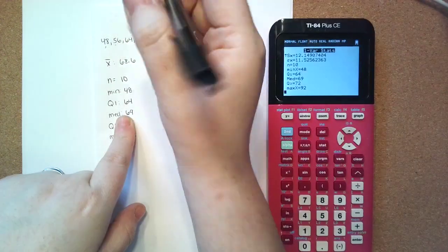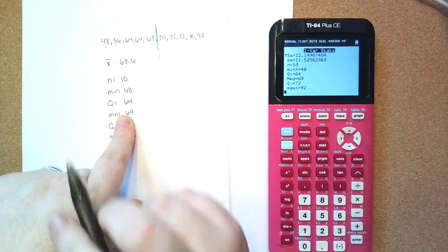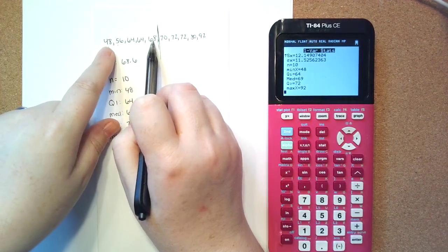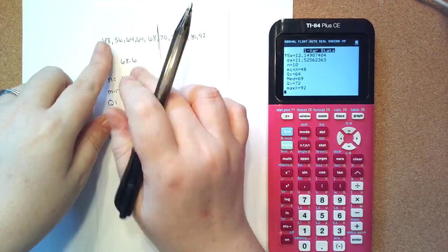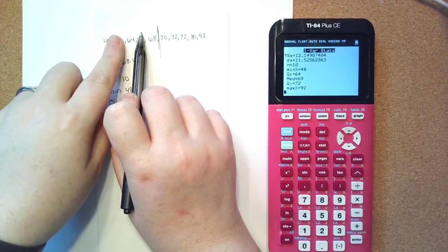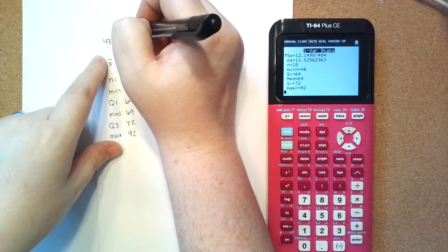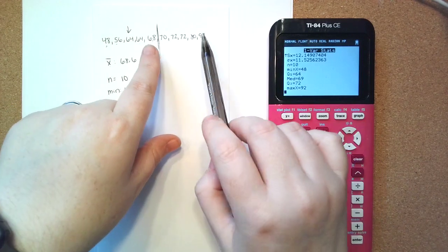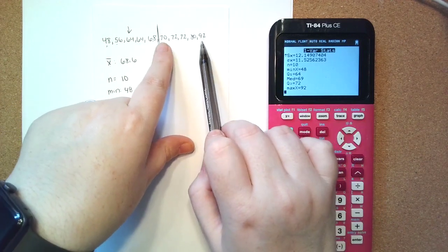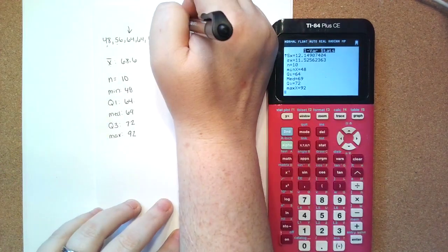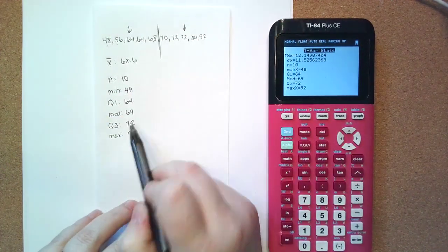So in order to do the Q1, we know that this would be our median. Q1 is the middle of your lower bound, or your lower half. So we have 68 and 48, then we have 64 and 56, and then 64 is your Q1, which is right here. Your Q3 is the median of your upper half. So we have 70 and 92, and then 72 and 80, and then 72 is the middle of your upper half, which is what we have here.